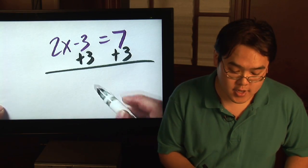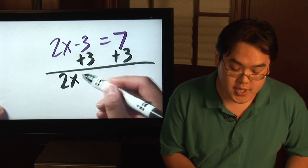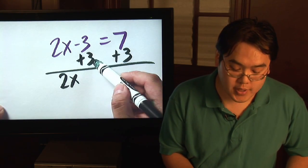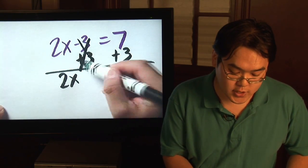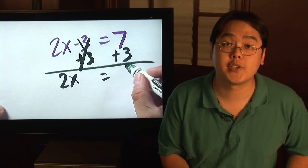And then you do the math. 2x still stays 2x. Negative 3 plus 3, those cancel out completely, and you're left with 7 plus 3 equals 10.